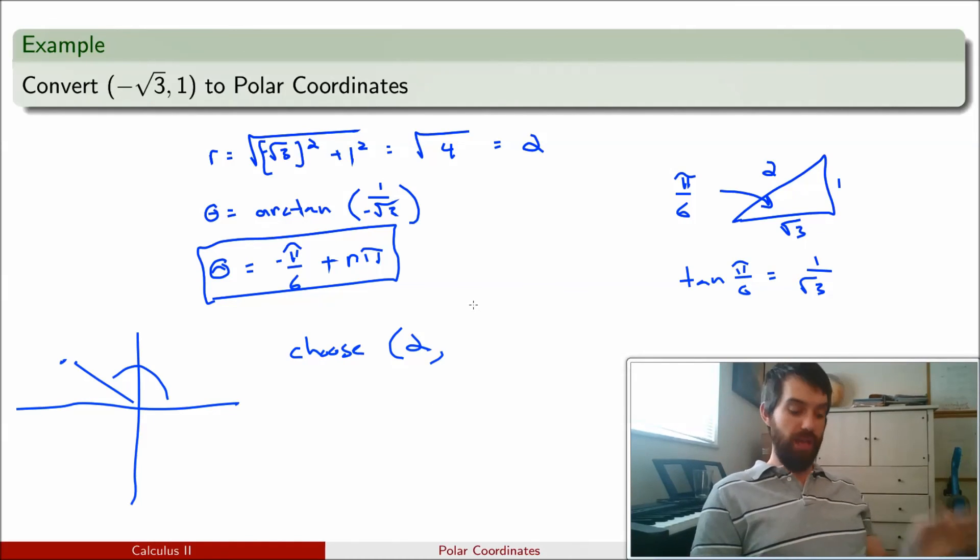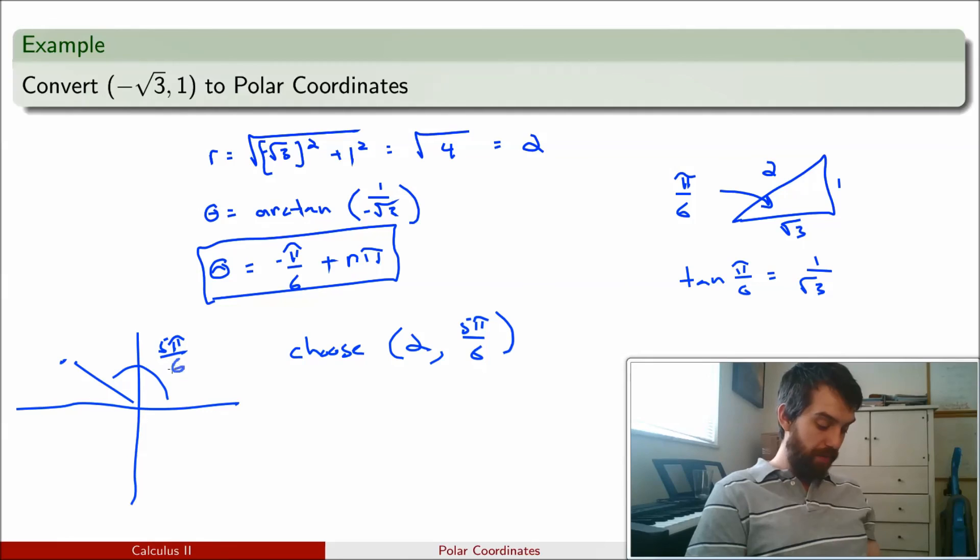And then I'm going to take minus pi over 6 plus a single copy of pi. So, that's going to go to 5 pi divided by 6. And so, this angle that I have over here is 5 pi divided by 6, and it kind of makes sense. That works out because this is a value just a little bit less than pi.